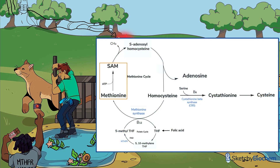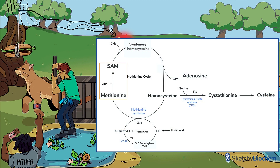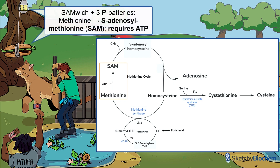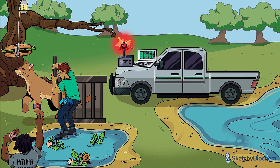After making methionine, it will become S-adenosylmethionine, or SAM. And what better way to show SAM than to lure our beloved mountain lion with a nice big sandwich? Good kitty. The pulley is powered by 3P batteries because making SAM requires ATP.